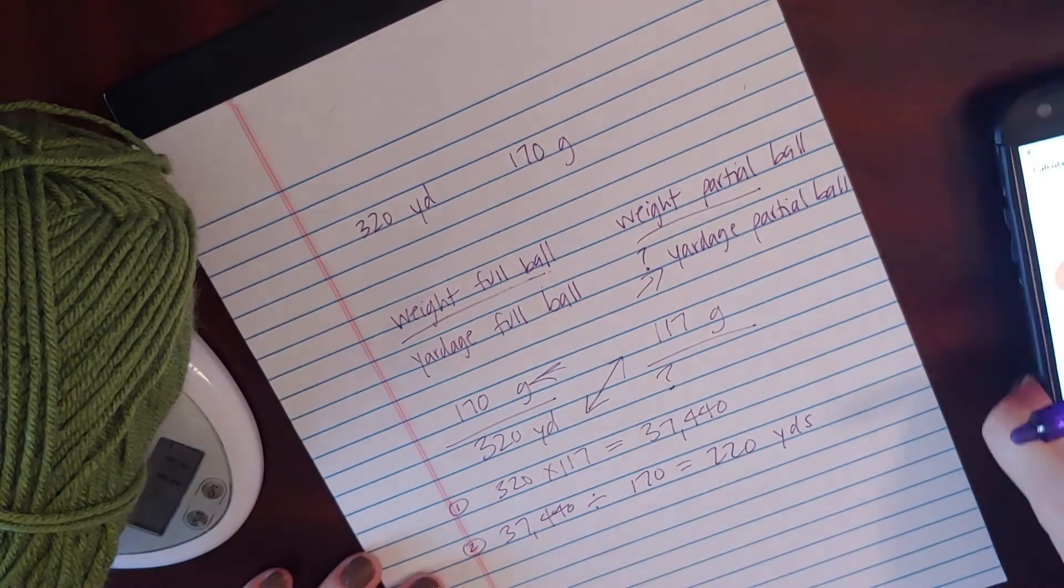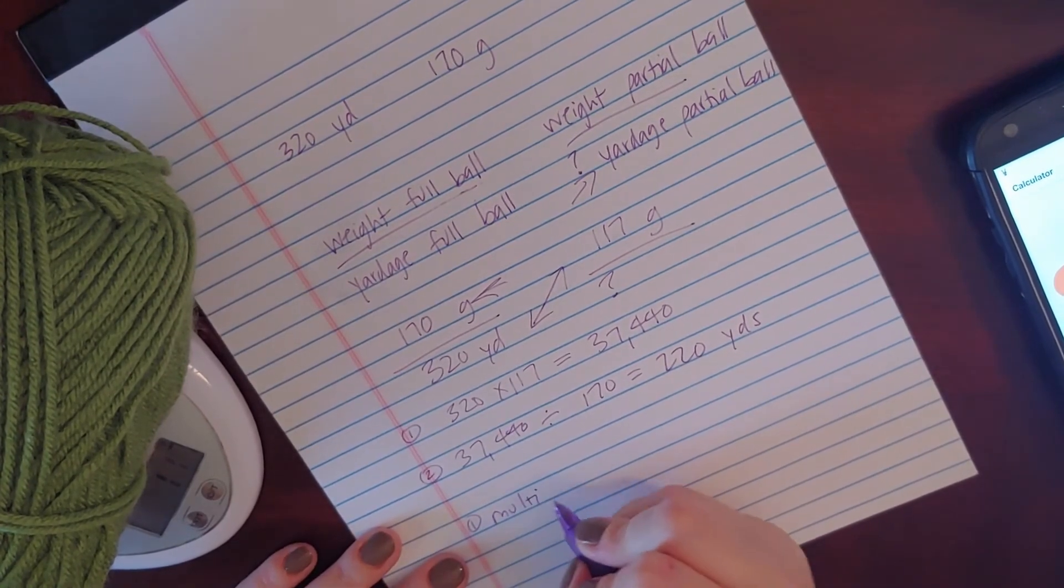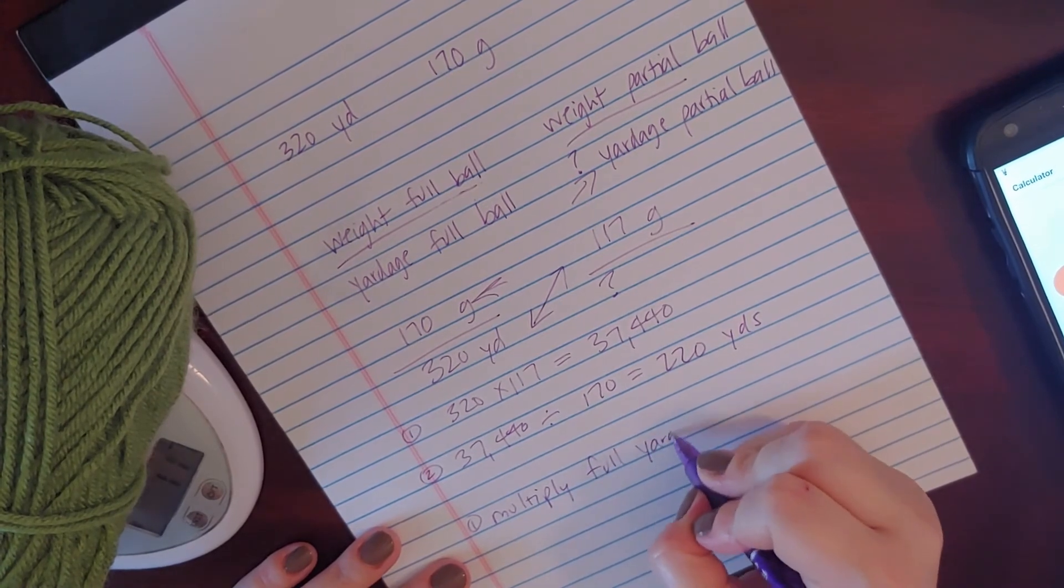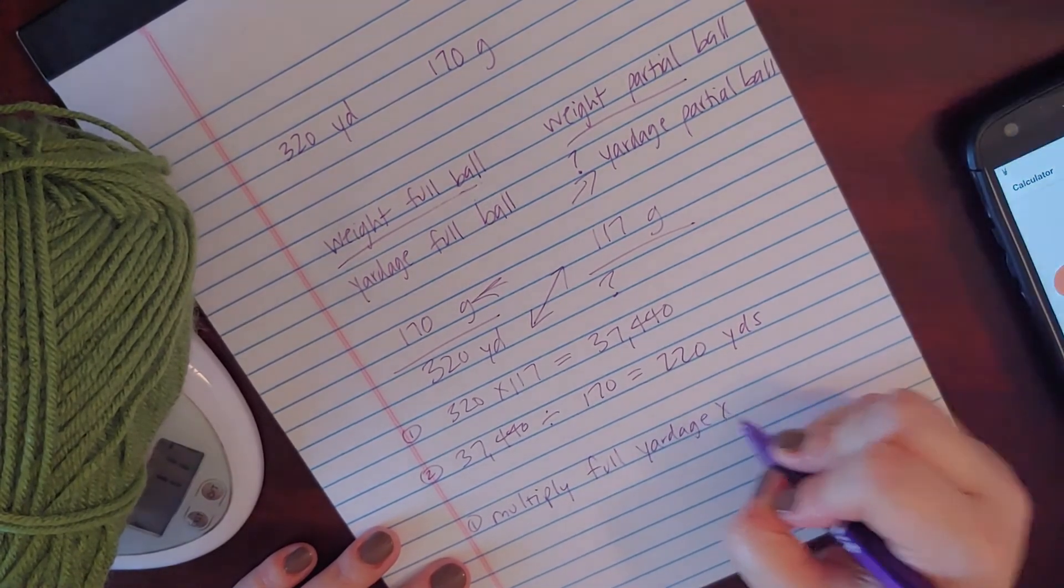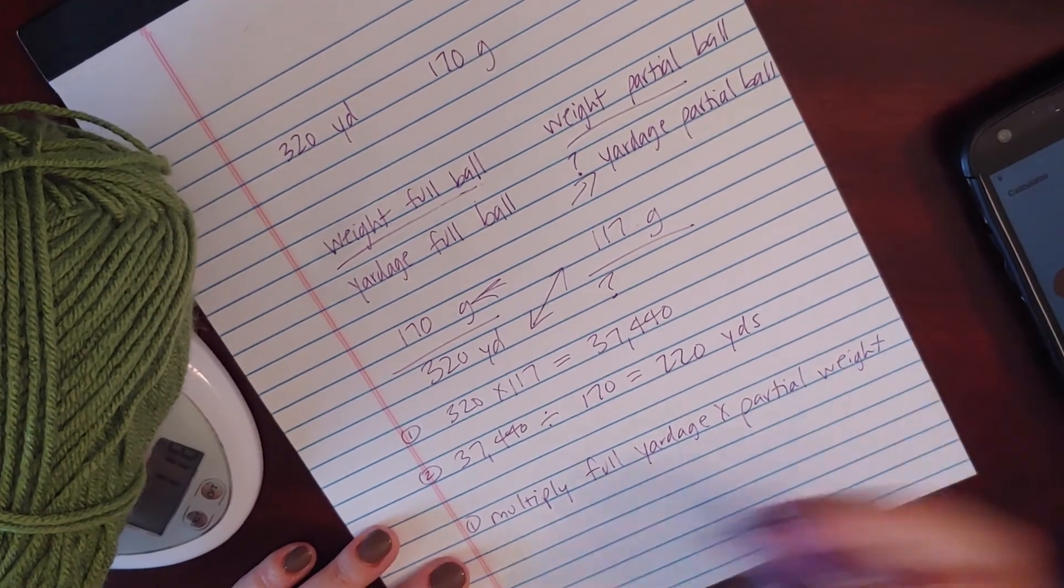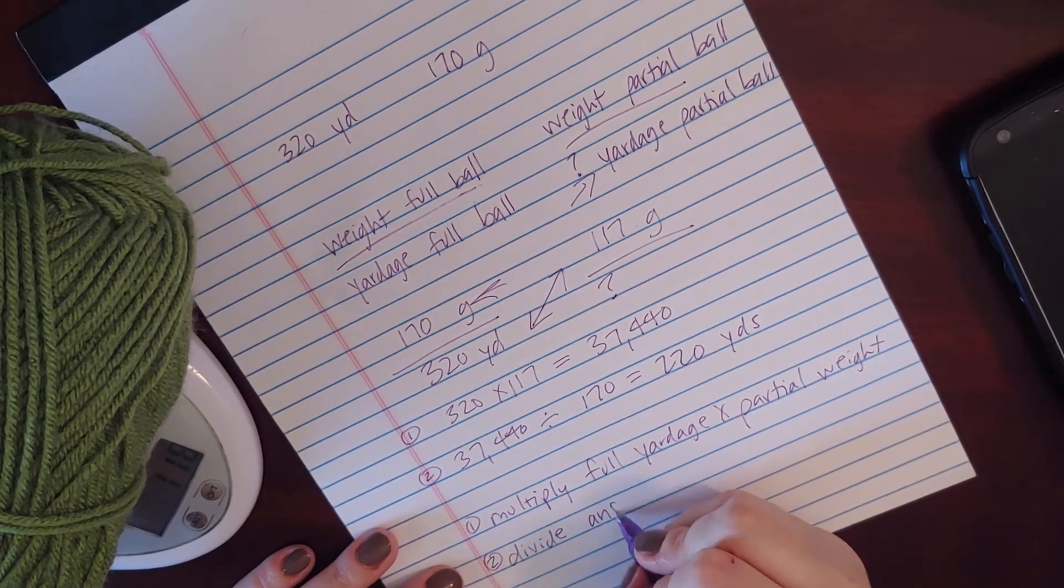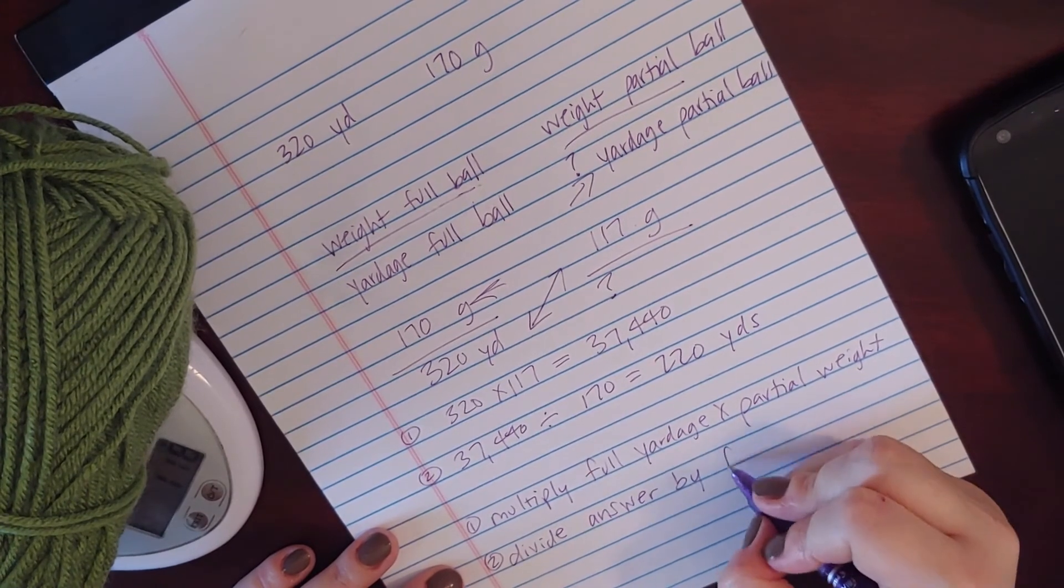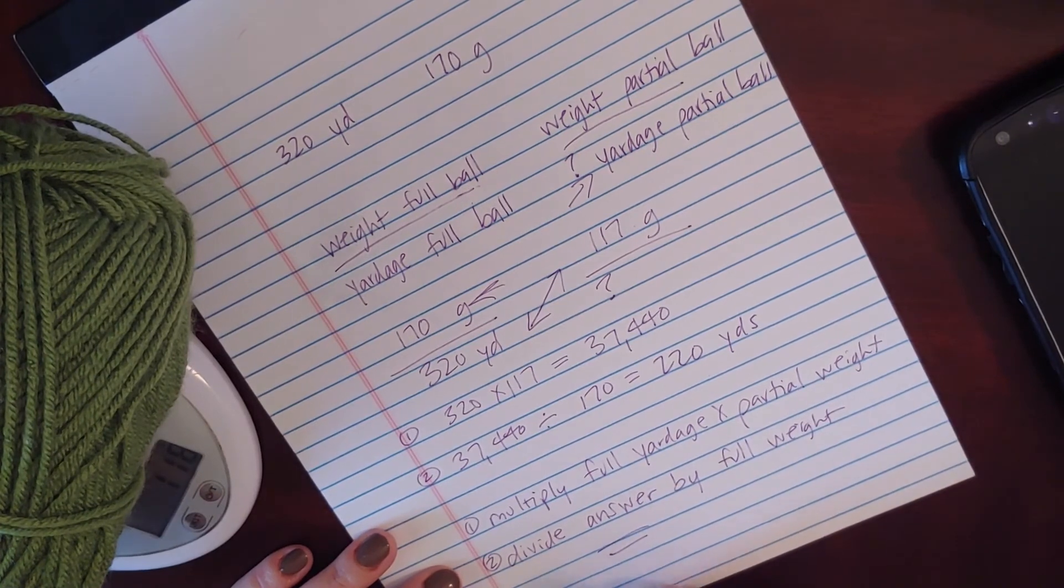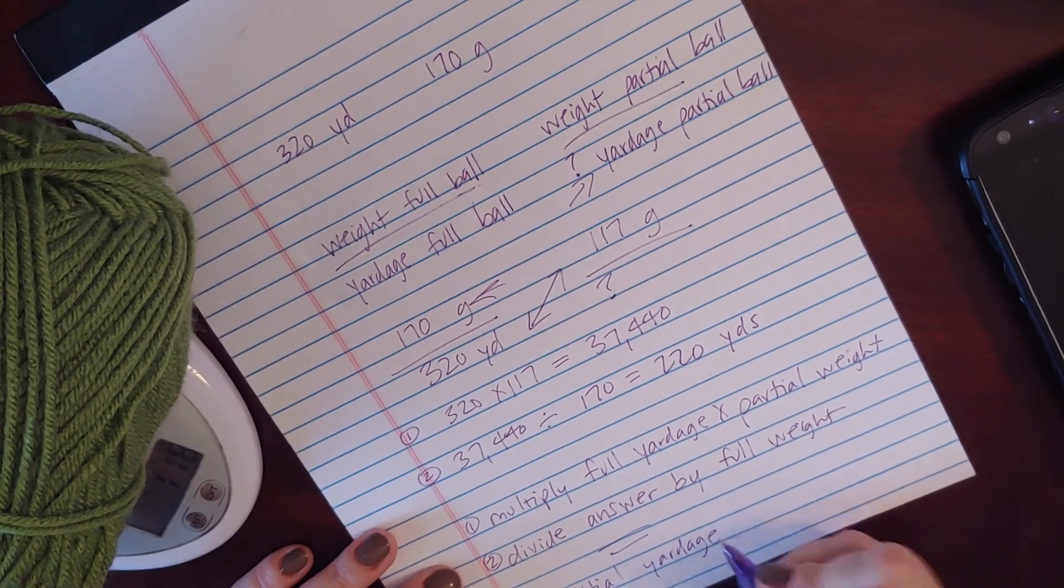So the formula is basically: step one, you multiply the full yardage times the partial weight. And step two, you're going to divide your answer by the full weight, and that's going to give you the partial yardage.